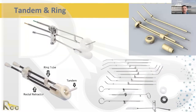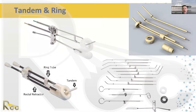Here are a few different types of tandem and ring applicators. They're all very similar in their overall design with the intrauterine tube — the tandem — and the ring, which is actually two rings in a sense for most applicators. You have the ring that contains the source path, and then usually there's a plastic ring or cap that snaps on top. Sometimes applicators have two different size caps. Most kits also have a rectal retractor, which helps dosimetry by pushing the rectum further posterior, increasing the space between the source and the rectum and helping spare excess dose.